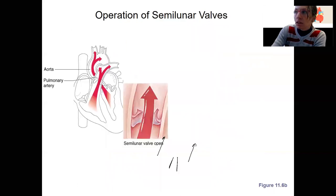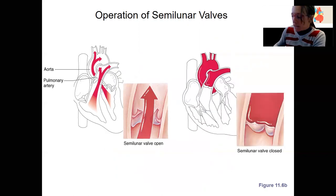Semilunar valves, different mechanism, right? So as the ventricles contract, ventricular pressure rises, forcing the semilunar valves open. When the blood flows out, pressure drops inside the ventricles, and the blood's out here now, pushes them back closed again. The pressure's now up here instead of down here.